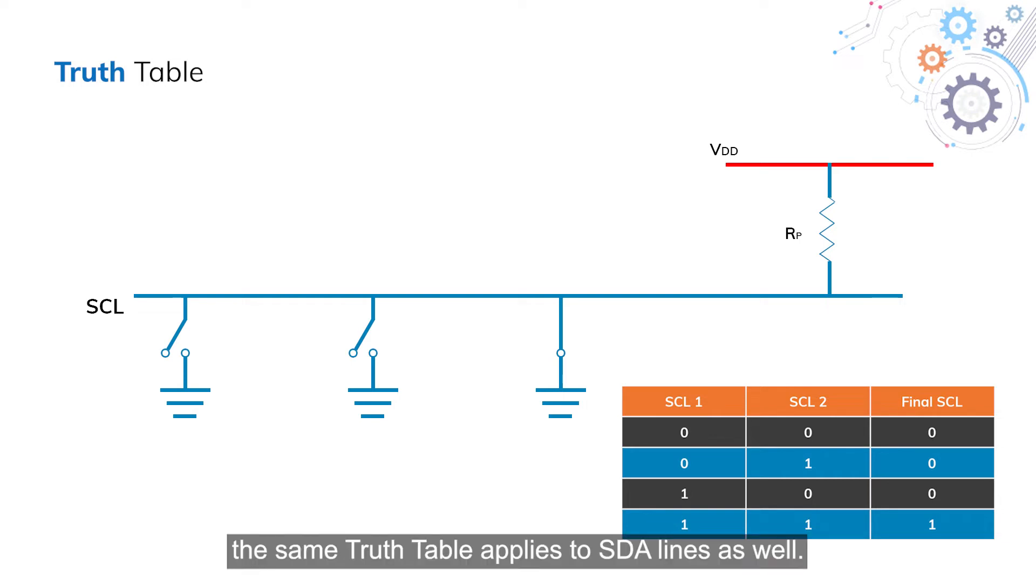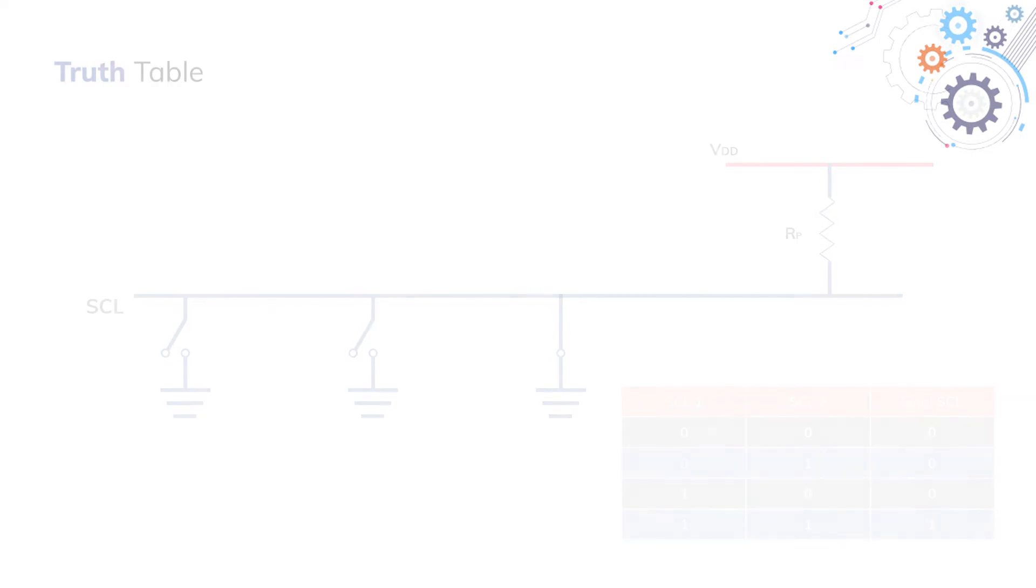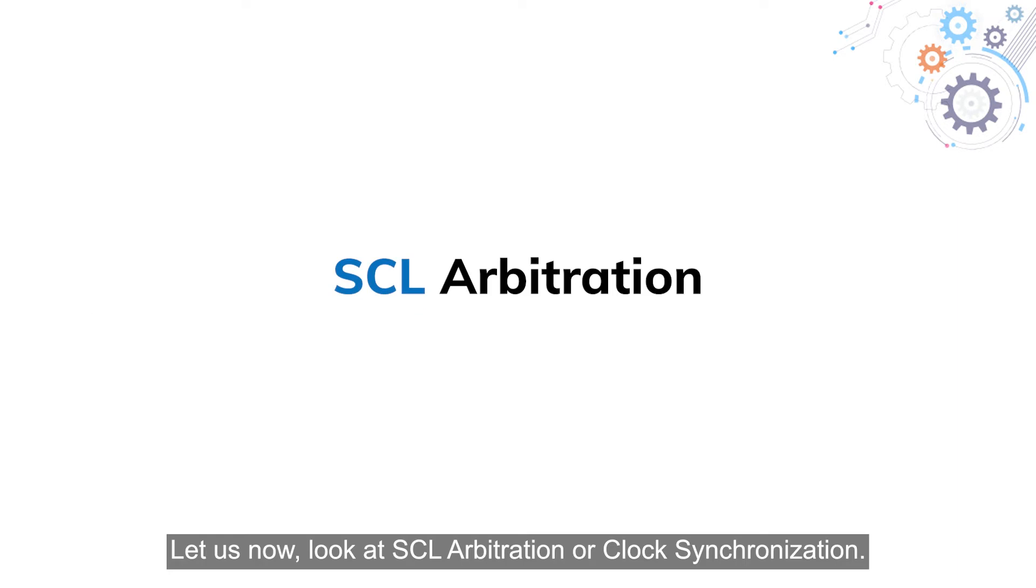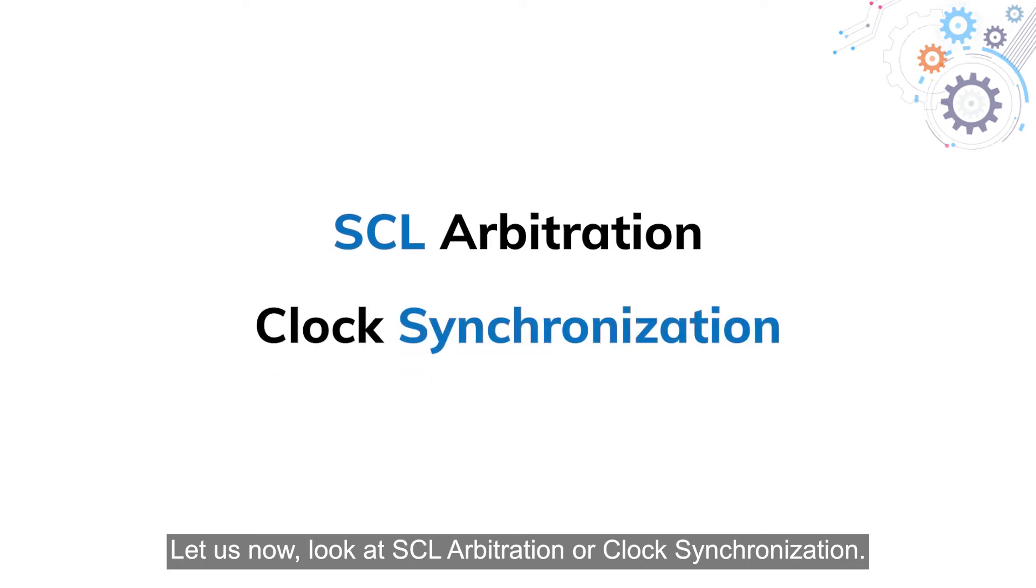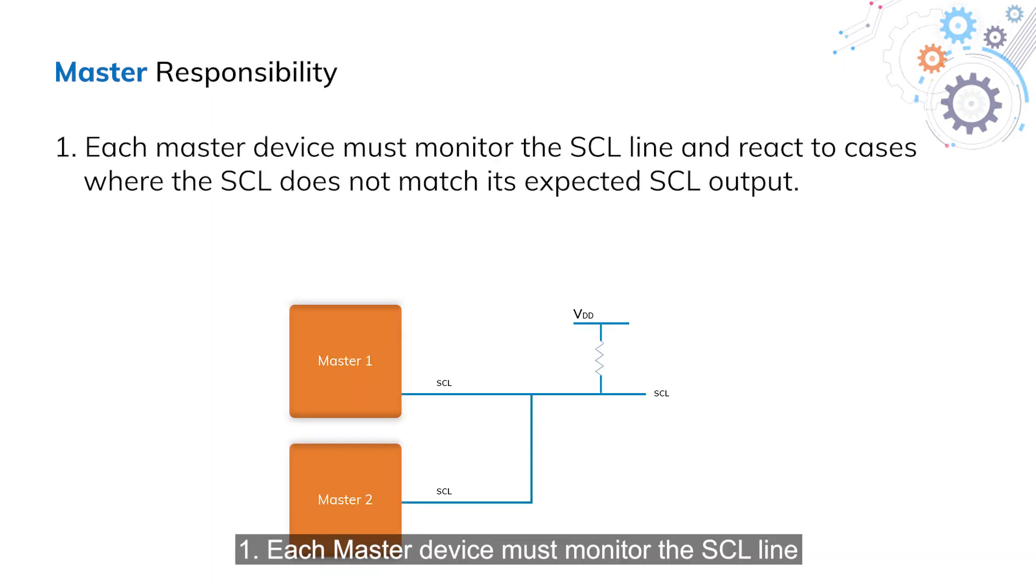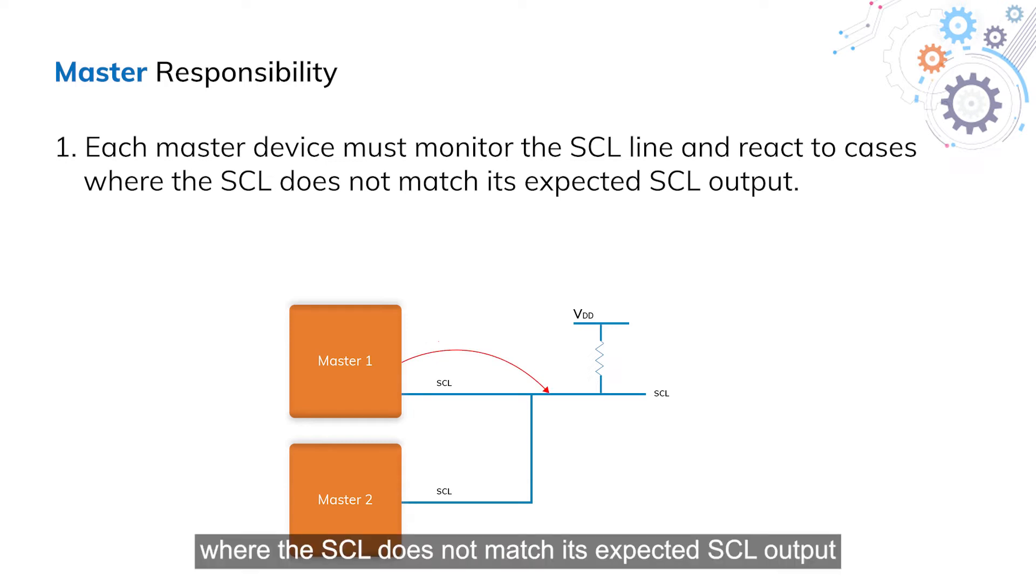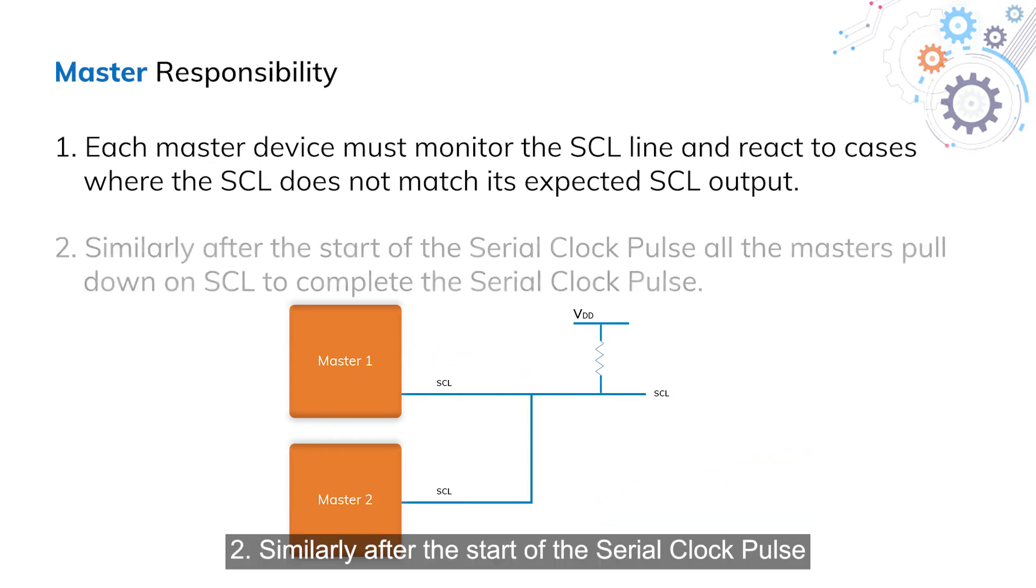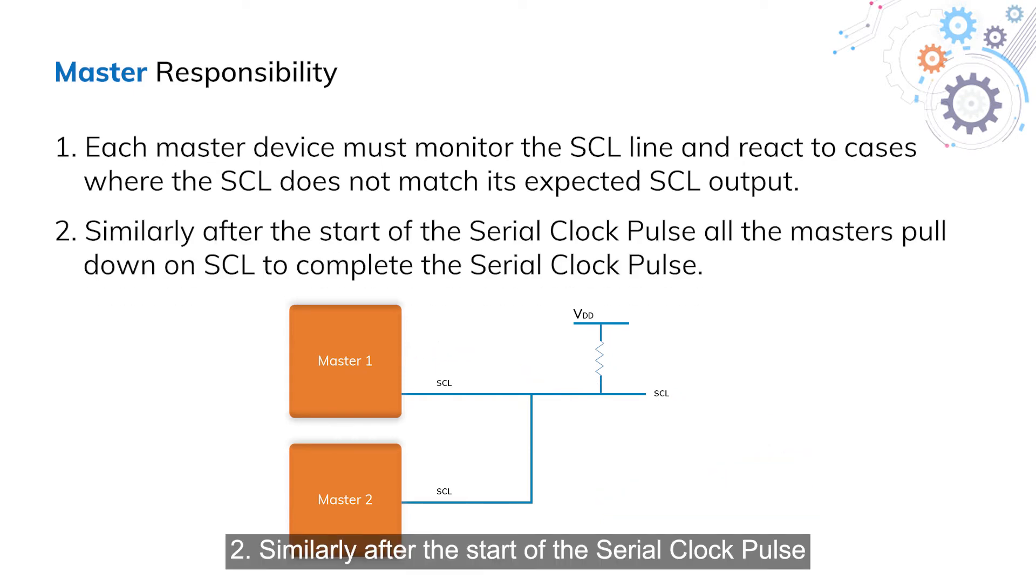The same truth table applies to SDA lines as well. Let us now look at SCL arbitration or clock synchronization. Master responsibility: 1. Each master device must monitor the SCL line and react to cases where the SCL does not match its expected SCL output. 2. Similarly, after the start of the serial clock pulse, all the masters pull down on SCL to complete the serial clock pulse.